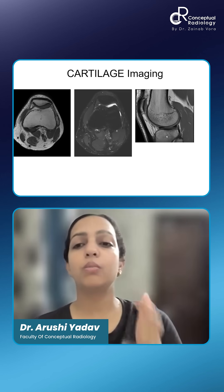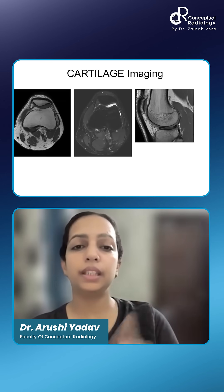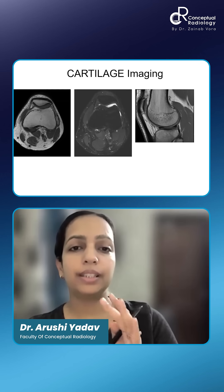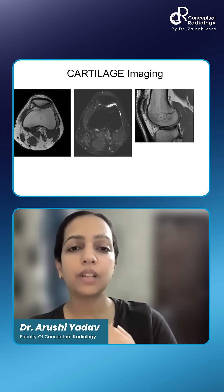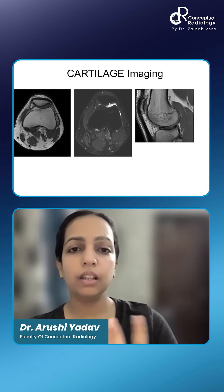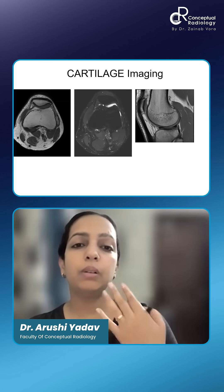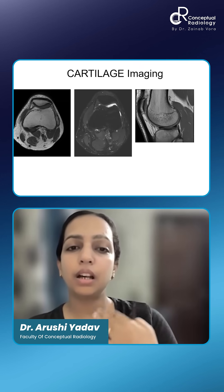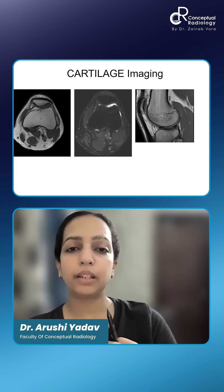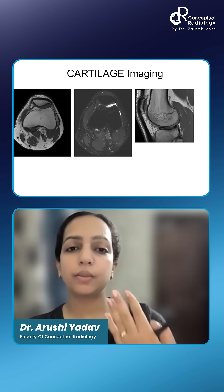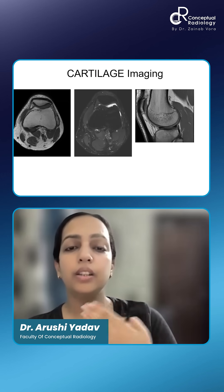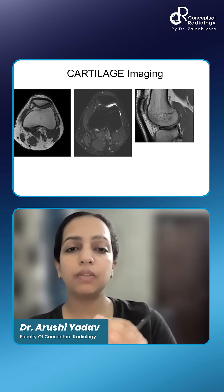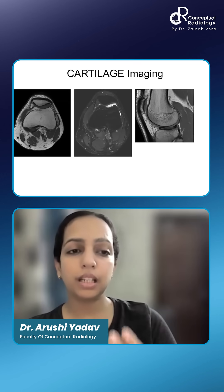Whenever you see a cartilage, it's important to see what is important to us. We should see the interface of the cartilage with the bone very well, and we should be able to see the interface of the cartilage with the other aspect also — either fluid or in the region of the meniscal view. We should see the interfaces very well to look for integrity.